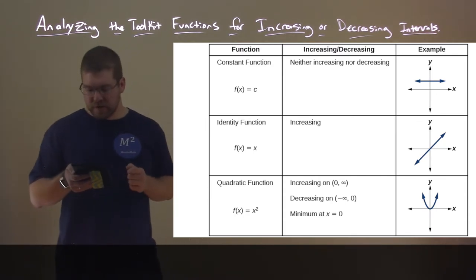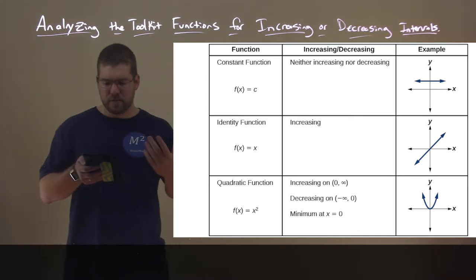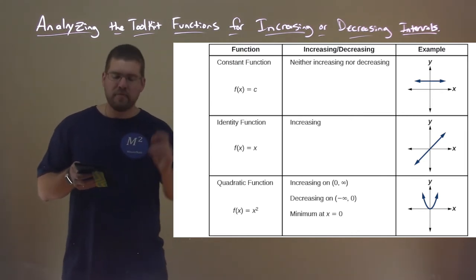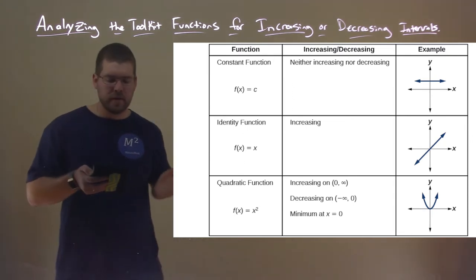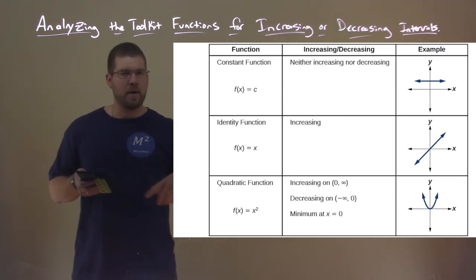Number two here is the identity function, f(x) = x. That function is always increasing. So we can see that in an example there, it's just always increasing, going up forever and ever.